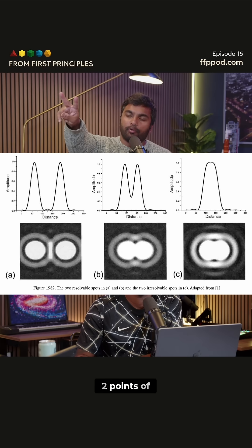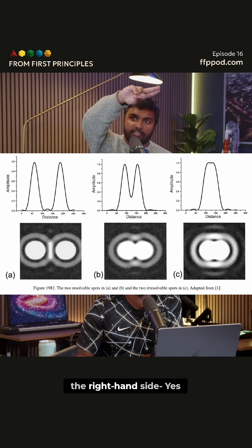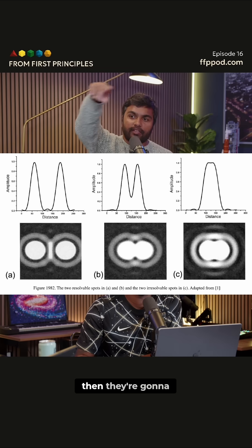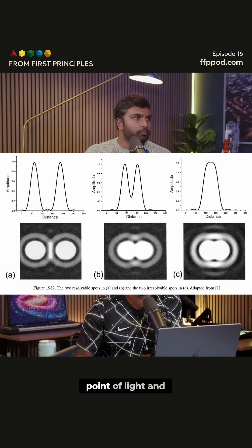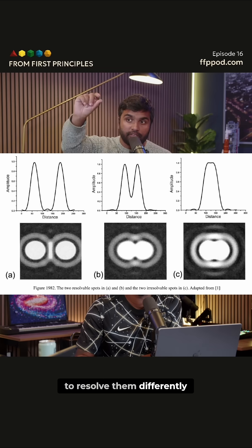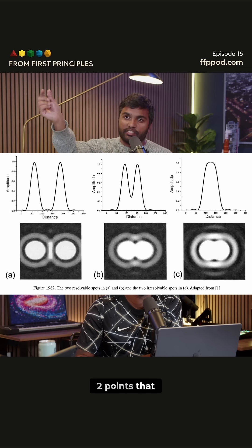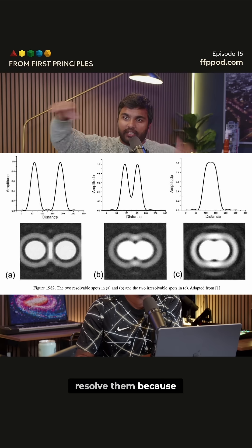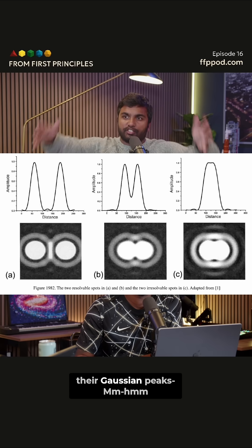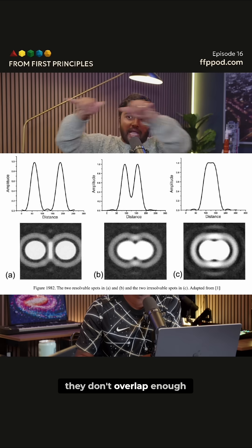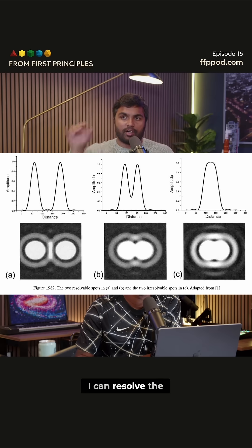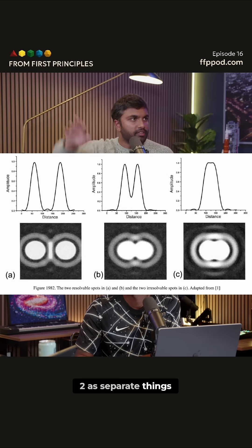If you've got two points of light that are really close together, as shown on the right-hand side, they're going to look like one point of light and you won't be able to resolve them differently. On the other hand, if the two points are a little bit farther apart, you can resolve them because their Gaussian peaks don't overlap enough — you can resolve the two as separate things.